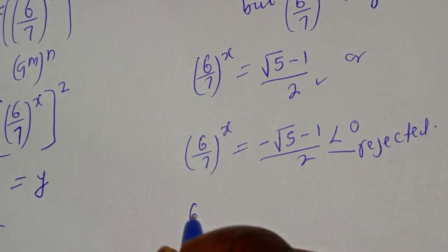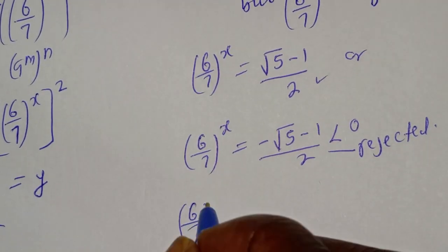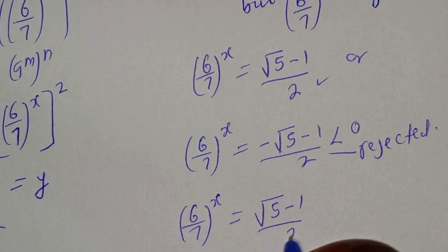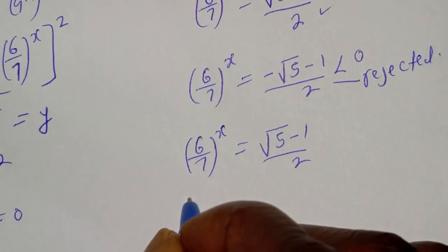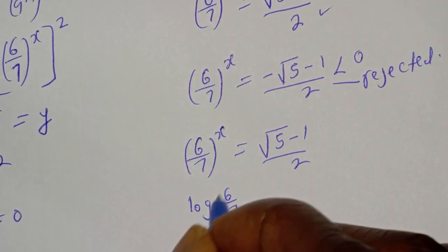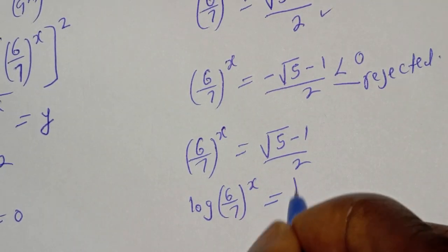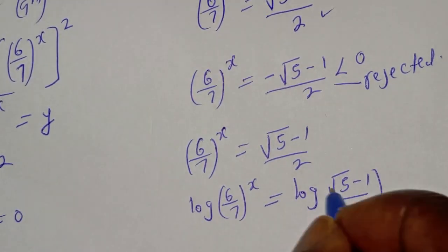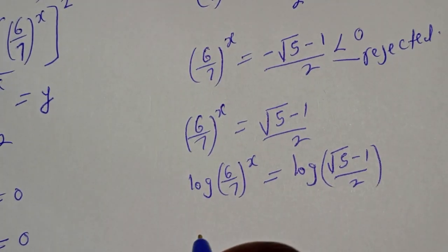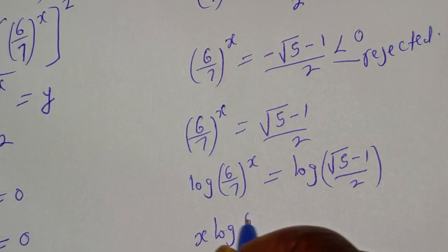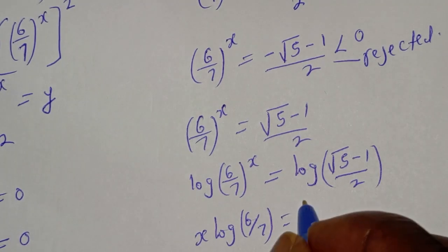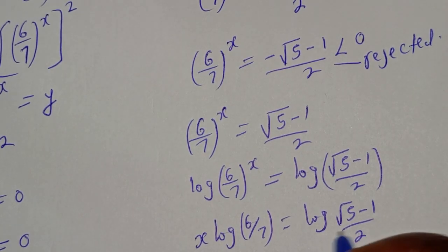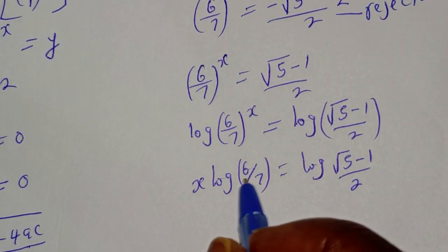So we work with (6 over 7) to the power of s equals (root 5 minus 1) over 2. Taking the log of both sides: log (6 over 7) to the power of s equals log of (root 5 minus 1) over 2. We are looking for s, so s times log (6 over 7) equals log of (root 5 minus 1) over 2. Dividing both sides by log (6 over 7):